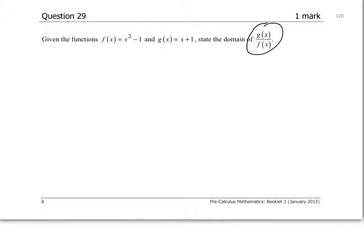So I don't know why they're putting it out of order here, but let's just write the function that we're supposed to have. x plus 1 goes on top because that's g of x, and x squared minus 1 goes on bottom.